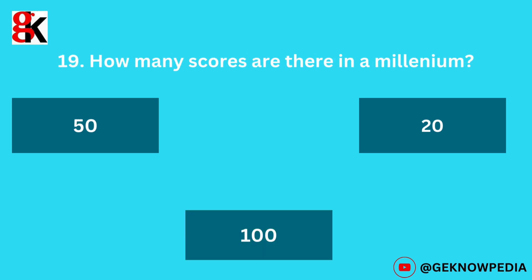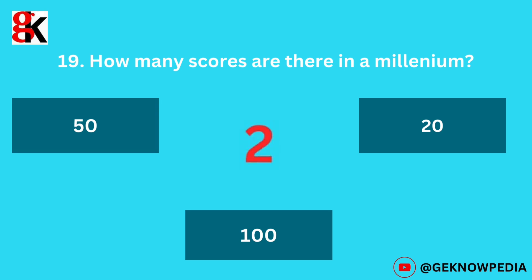Nineteenth question. How many scores are there in a millennium? Options: fifty, twenty, one hundred, two, three. The correct answer is 50.